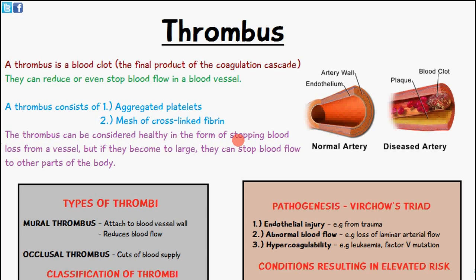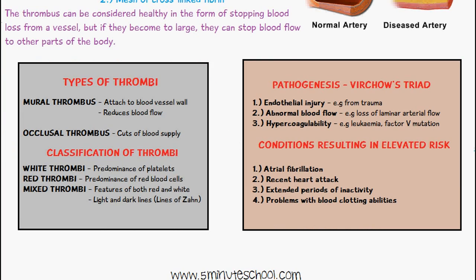A thrombus is the final product of the coagulation cascade. It consists of platelets, or thrombocytes, which are clumped or aggregated together, along with a mesh of cross-linked fibrin. The types of thrombi include mural thrombi, which often occur in larger blood vessels like the aorta. They attach to the blood vessel wall but don't completely stop blood flow — they only reduce it.